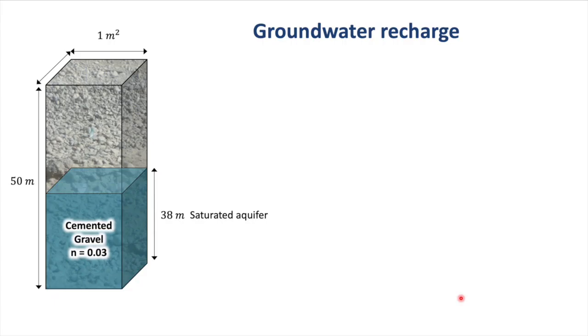Okay, let's have a look at how we can apply what we learned today to estimating groundwater resources and groundwater recharge. Here's an aquifer which is made of cemented gravels. That means that it has quite a low porosity, and we've assumed it to be 0.03 or 3%. The aquifer is 50 meters in thickness, and last August the static water level was about 12 meters below the ground surface. That means that we have 38 meters of saturated aquifer.